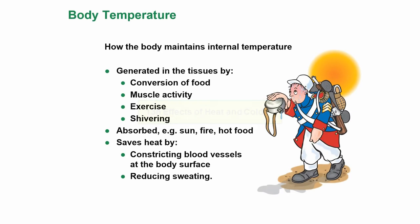Effects of heat and cold. Looking at body temperature — the body maintains what we call homeostasis, or internal temperature, every second of every minute of every hour of every day. Heat is generated in the tissues by conversion of food to energy, by the use of muscles, by exercising or by shivering. Heat can be absorbed from the sun, from fire, or from hot food. The body can also save heat by constricting blood vessels at the body's surface and by reducing sweating.